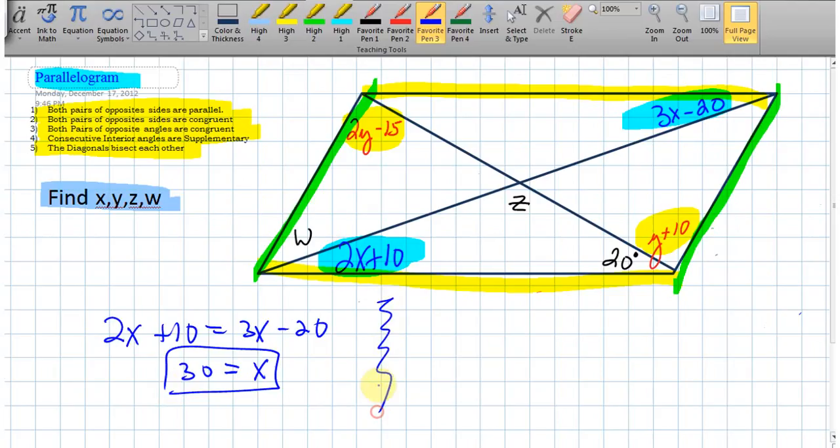Alright, so let's draw a little line in the sand here, and what do we have? We have 2y minus 15 equals y plus 10. We know those two angles are going to be congruent because we have parallel lines and alternating interior angles. And so if we solve for y in here, y turns out to be 25.